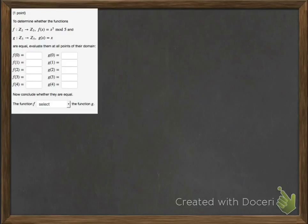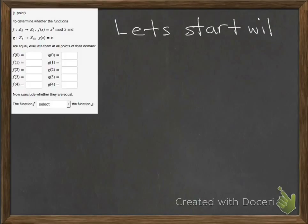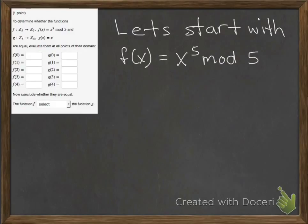Note that both f and g have the same domain and the same codomain, Z₅ to Z₅. Let's start with f of x. f of x equals x to the fifth mod 5, which equals the remainder — so we're going to be calculating remainders.